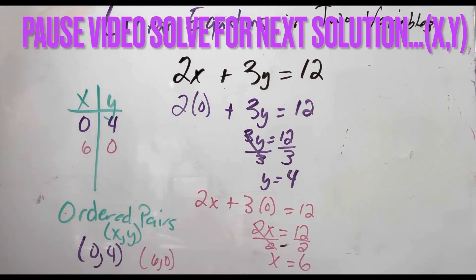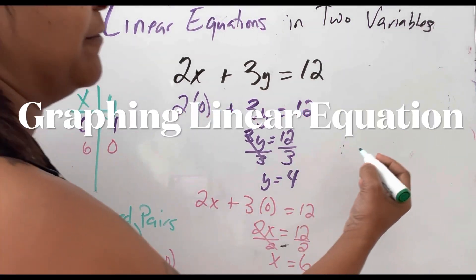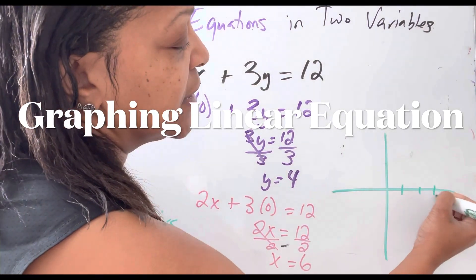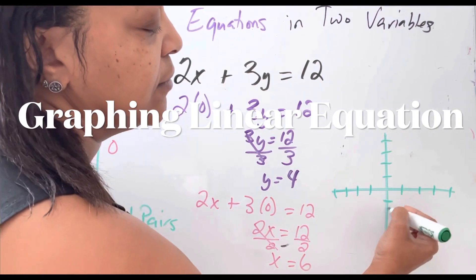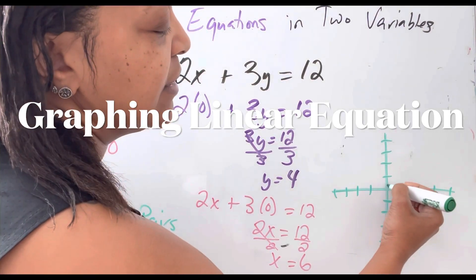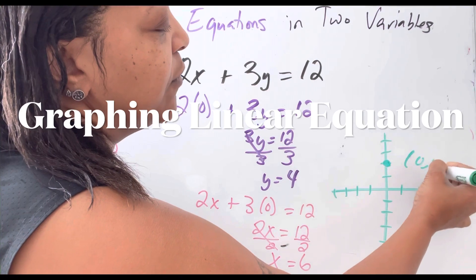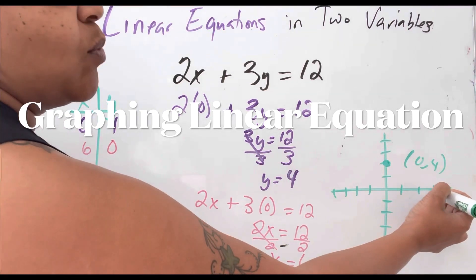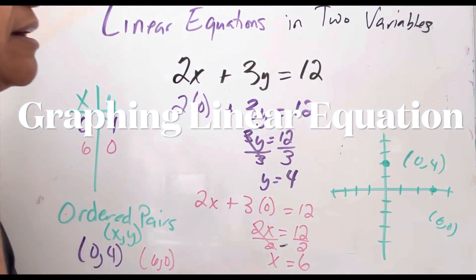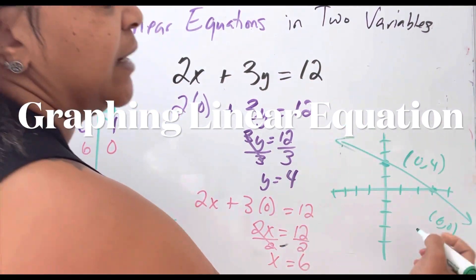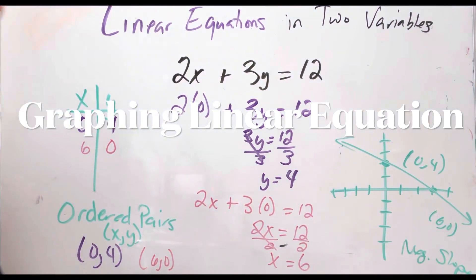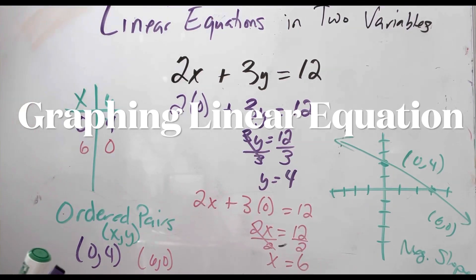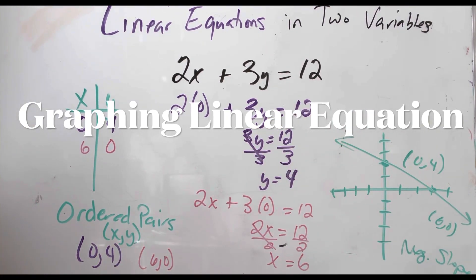Now I have ordered pairs because I want to do my graphing. I needed those coordinates to put them on the graph. My first ordered pair was 0 comma 4 — x is 0, y is 4, so that's here. My next ordered pair is 6 comma 0 — x is 6, y is 0, so that's here. I always write my ordered pairs on the graph. We can see this has a negative slope — the line is going downhill. A positive slope would go uphill.